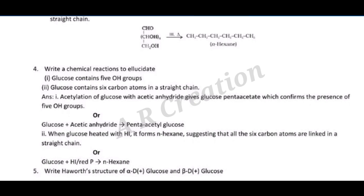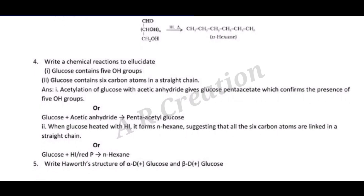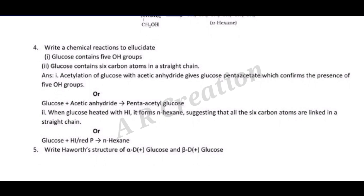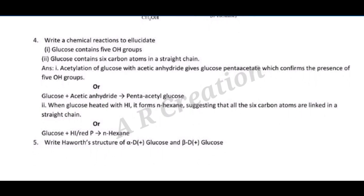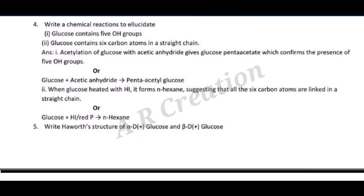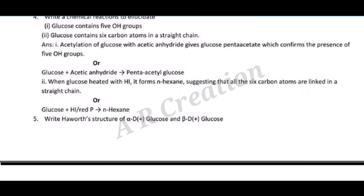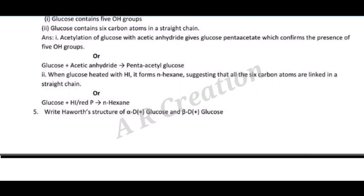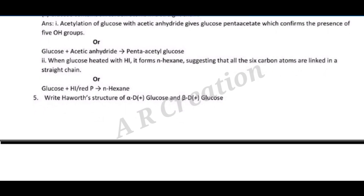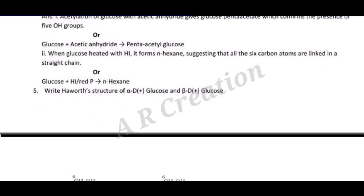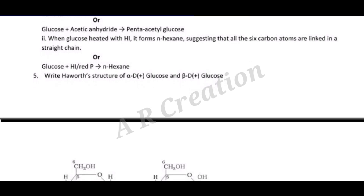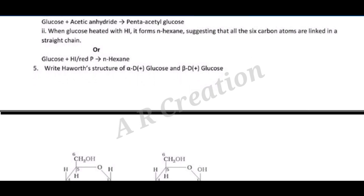Question four: write chemical reactions to elucidate (i) glucose contains five OH groups, (ii) glucose contains six carbon atoms in a straight chain. Answer: (i) Acetylation of glucose with acetic anhydride gives glucose pentaacetate, which confirms the presence of five OH groups: glucose + acetic anhydride → pentaacetyl glucose. (ii) When glucose is heated with HI and red phosphorus, it forms n-hexane, confirming all six carbons are in a straight chain.